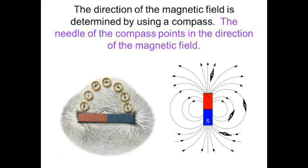The direction of the magnetic field is determined by using a compass. The magnetic needle of the compass points in the direction of the magnetic field. Whenever using a compass, you can draw an imaginary line to map the magnetic field direction.